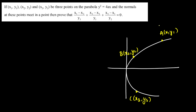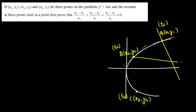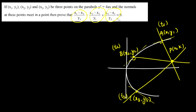Let me also name them parametrically: this is t1, this is t2, and this is t3. Now if I draw a normal at A, it will be something like this. Normal at B will be something like this — 90 degrees here. And normal at C will be something like this. All the normals are passing through a common point, let's say P at (h, k). Now we need to prove that this expression is equal to zero.